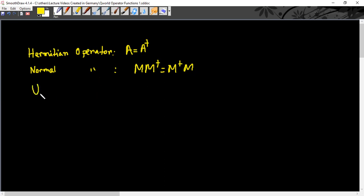And what is a unitary operator? Unitary operators are those operators which satisfy the condition U times U-dagger equals the identity matrix.